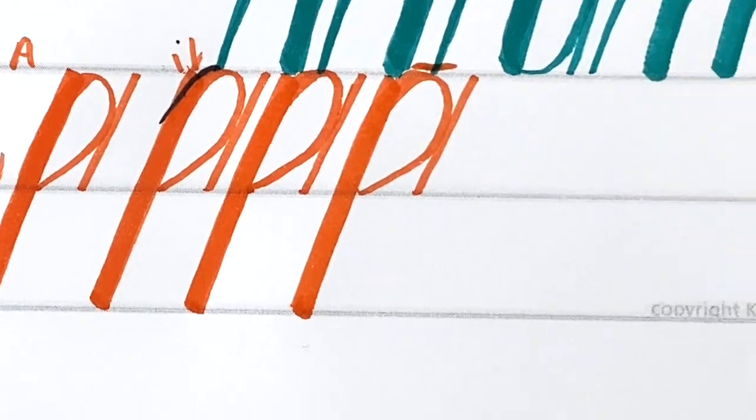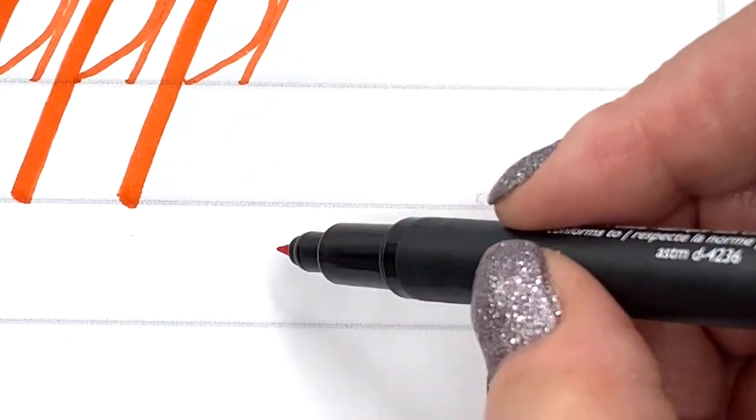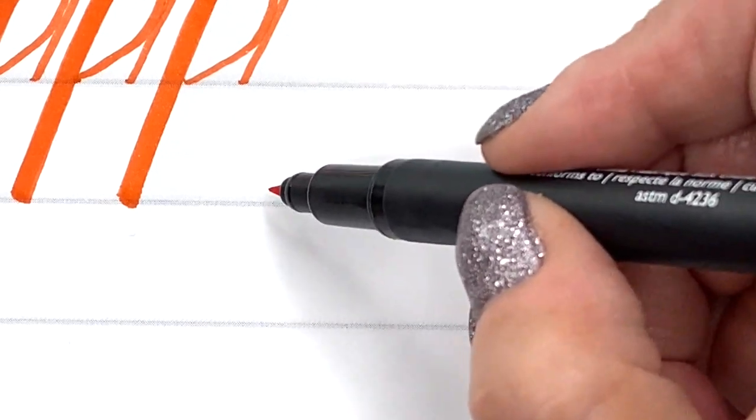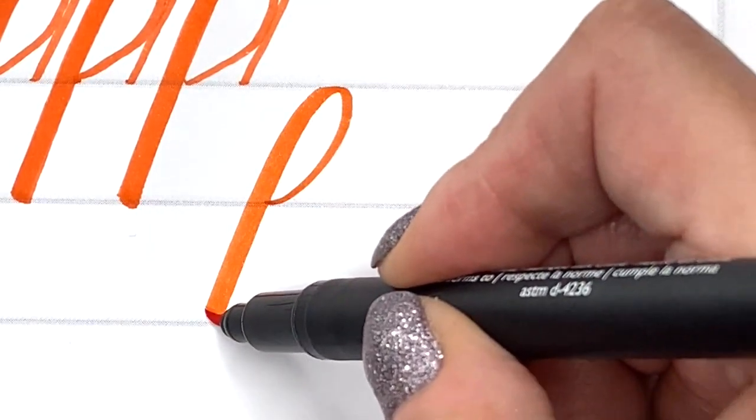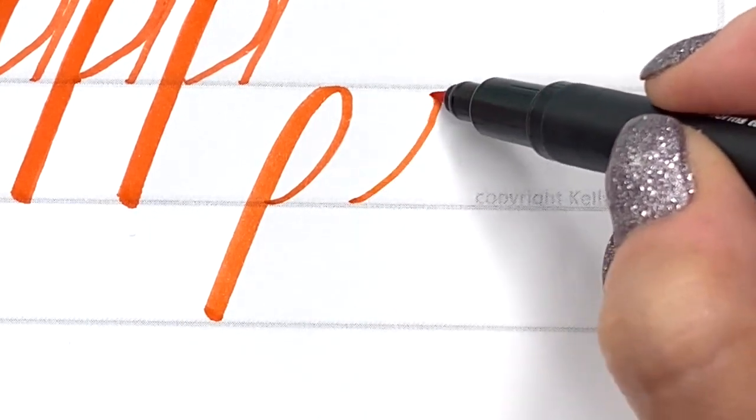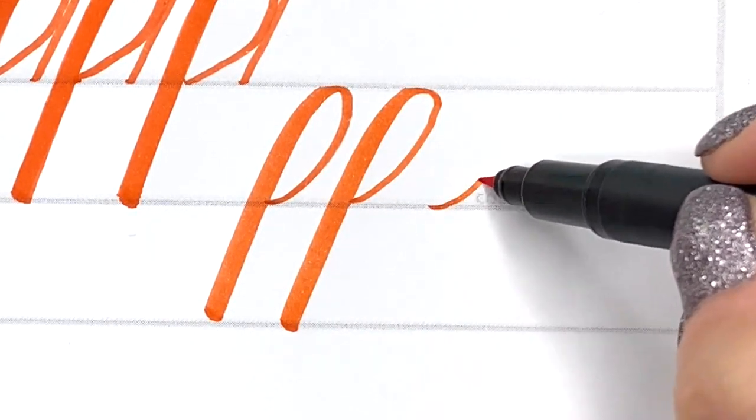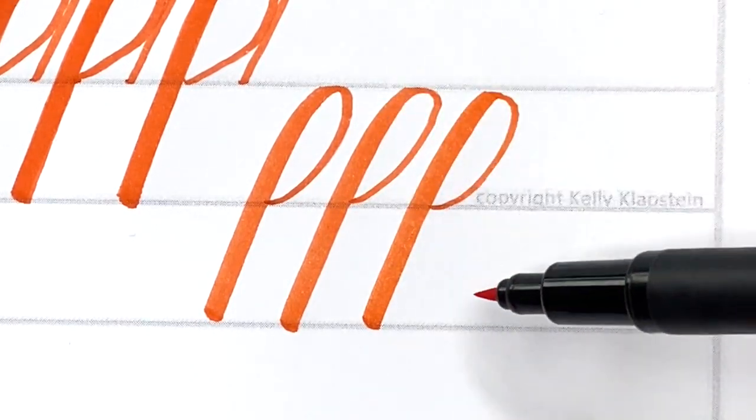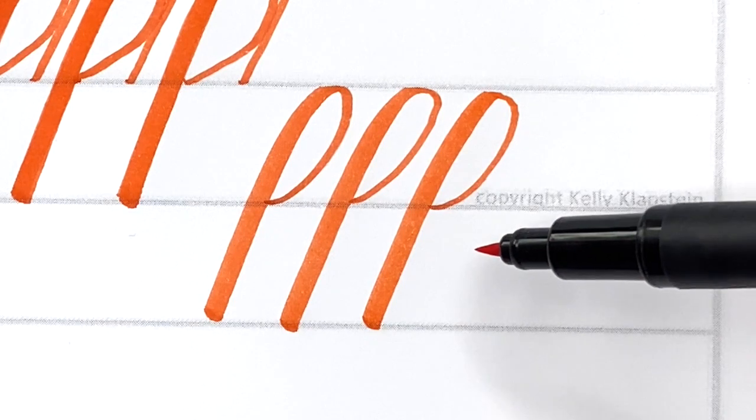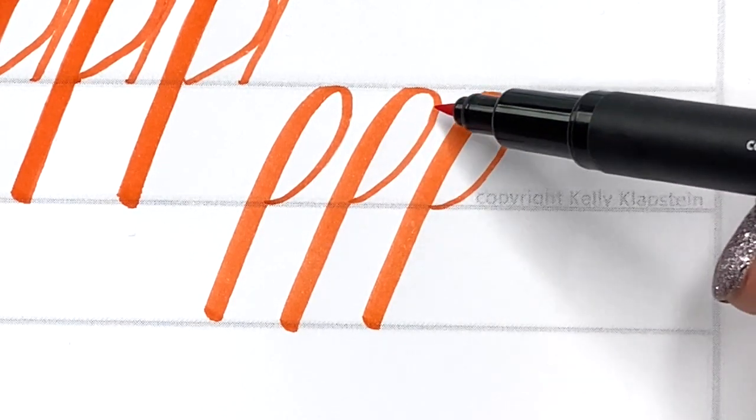But your goal when you're practicing as a beginner and you're training your hand is to have your loops the same way, so that when you go into your freehand practice—I'll just move it down here so you can see it more clearly—you should be able to maintain that same loop size and the same angle every time you draw a loop.